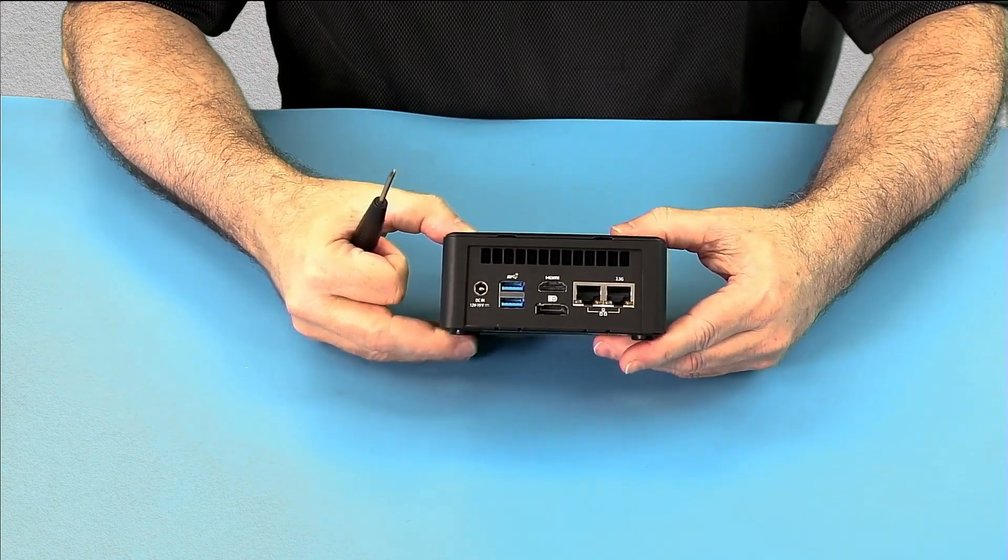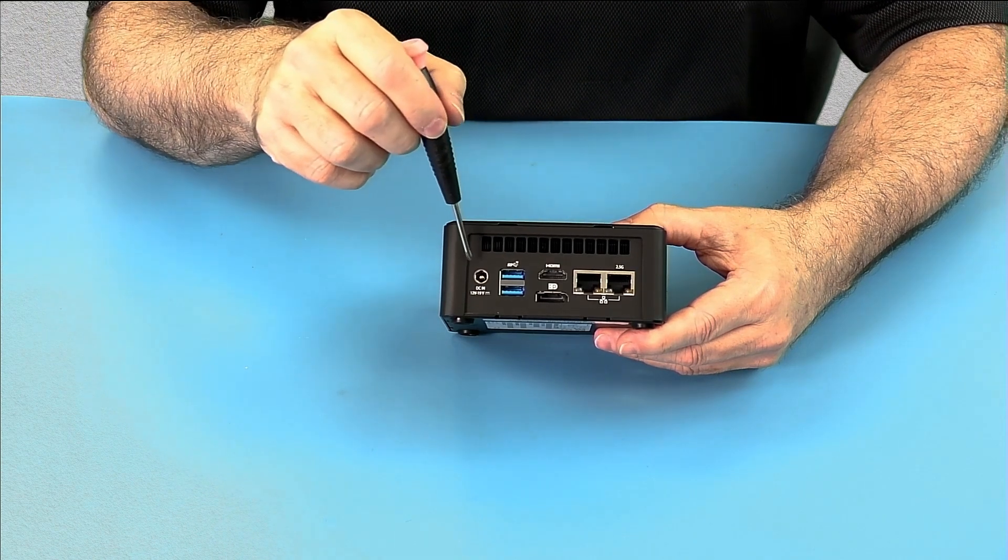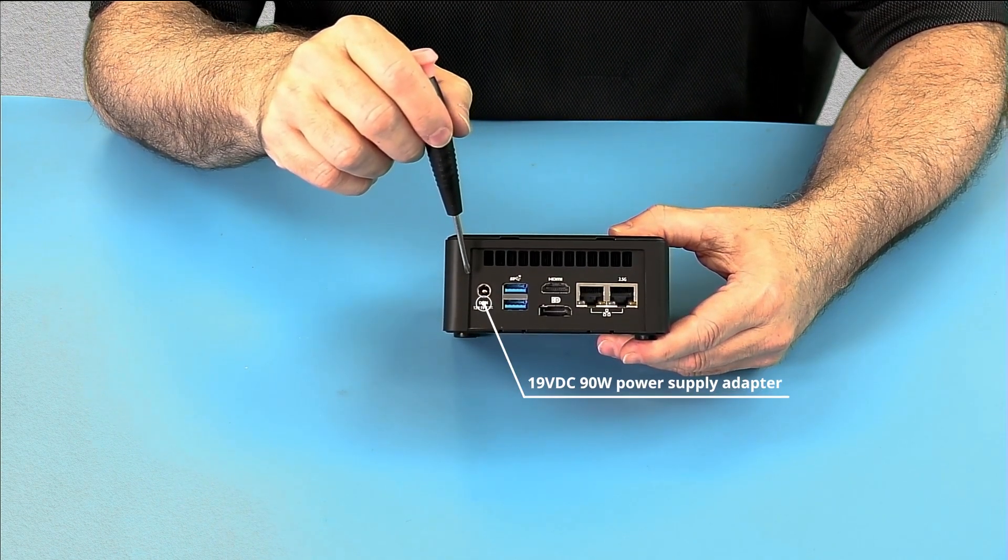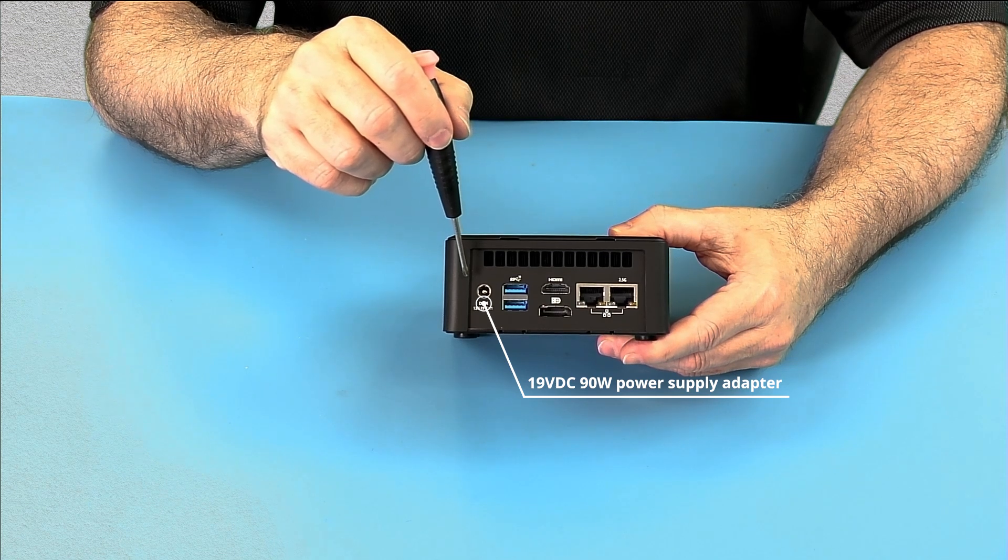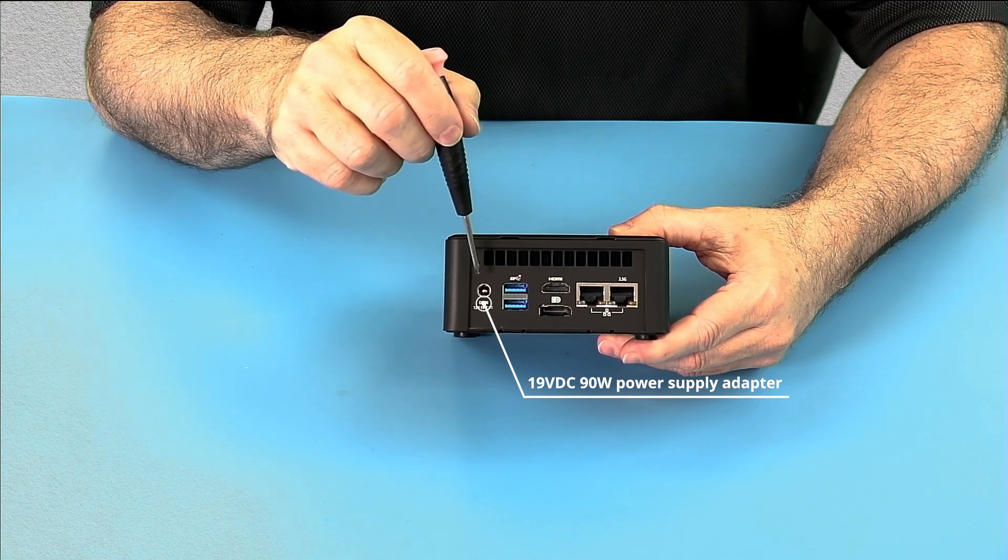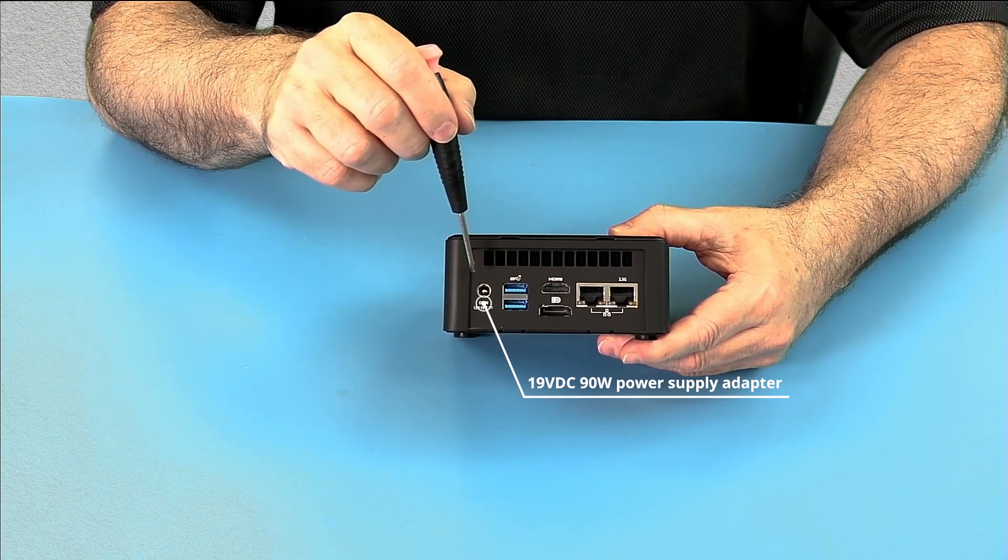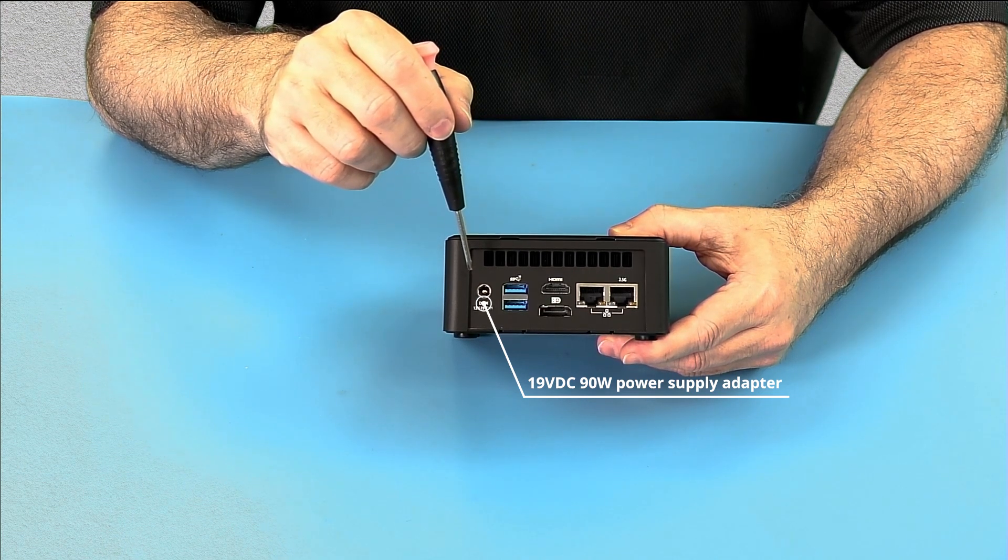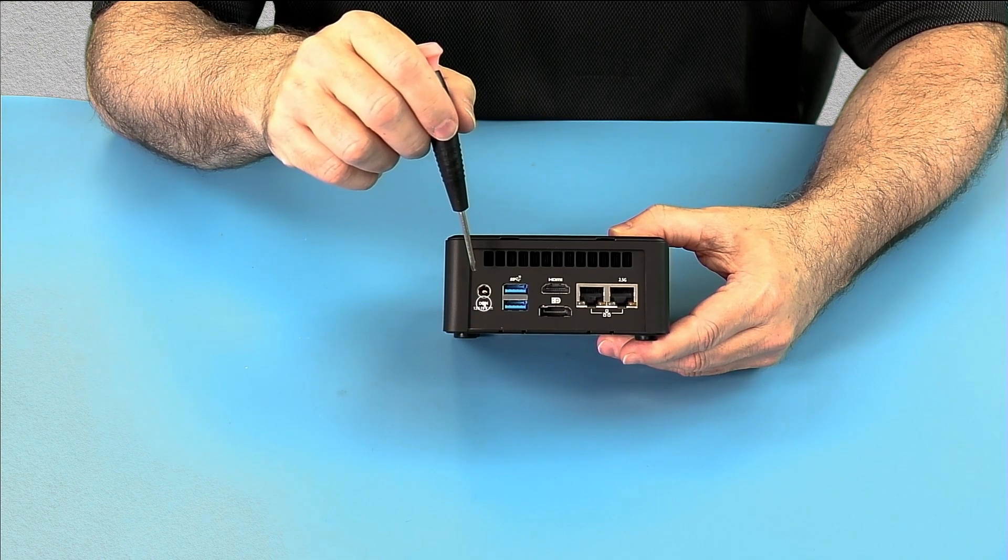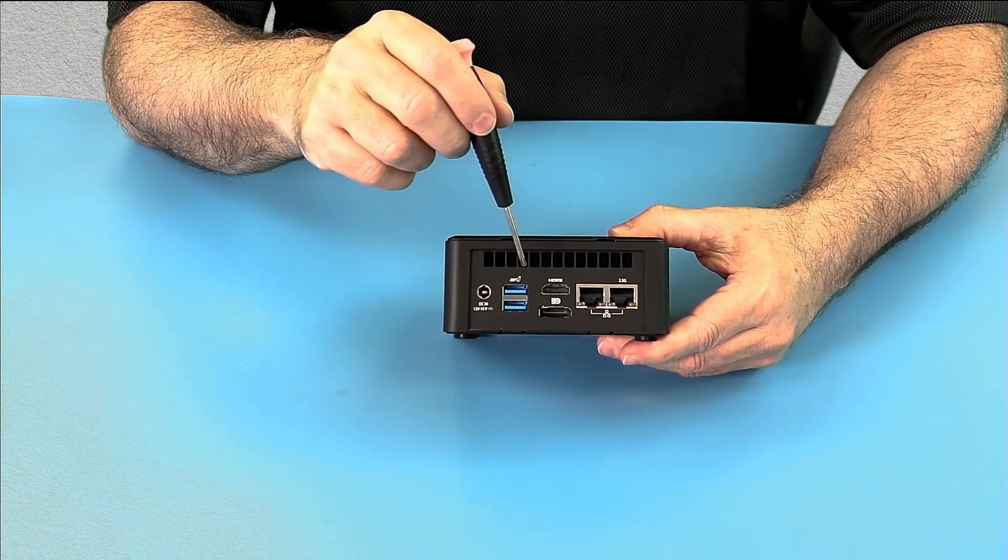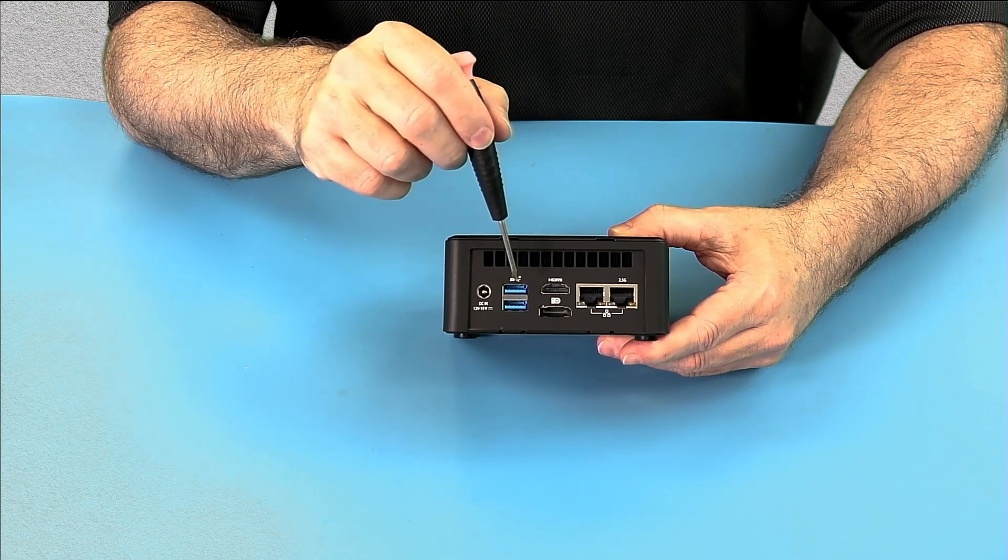Looking at the back, starting from the left, we have our 5.5 x 2.5 center positive DC jack. And we supply a 19 volt brick, 90 watt brick with the unit. The unit will run on a wider voltage, but we do supply the 19 volt brick.